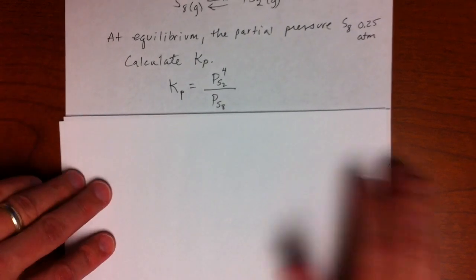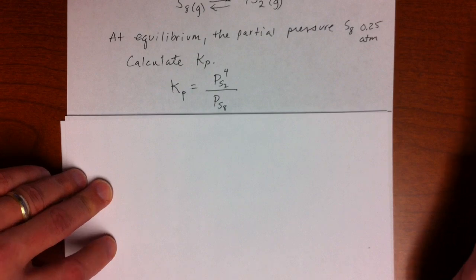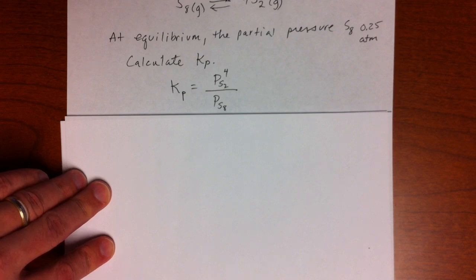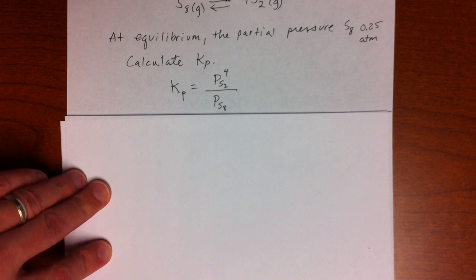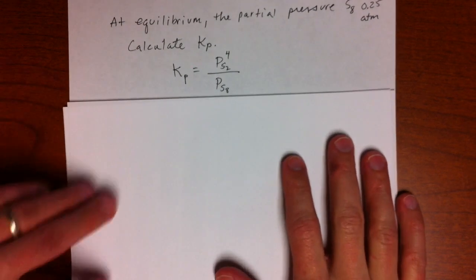And so in this case, we want Kp, and we're given some concentrations. So it's different in that we need to find out K. So an ice table is going to be handy here as well. We're just going to use it differently, because we're missing some information.